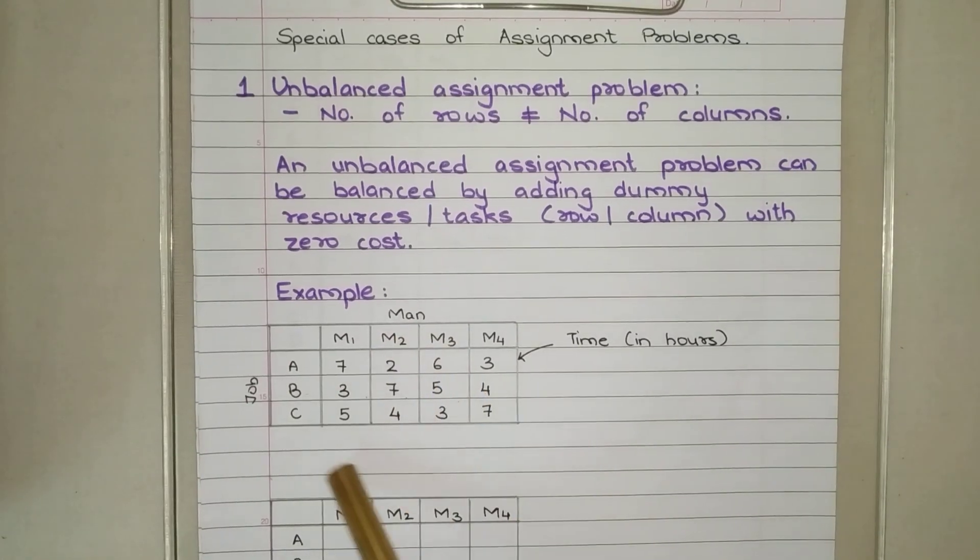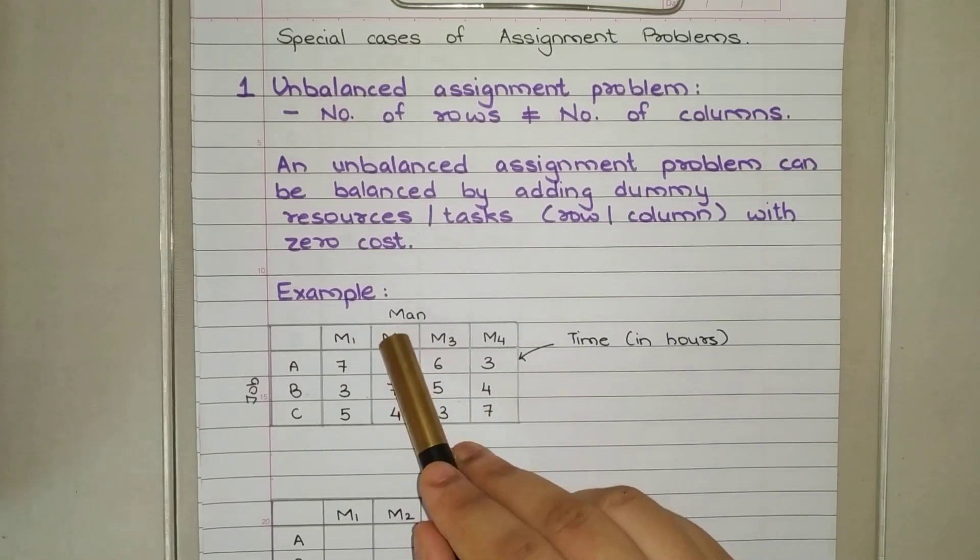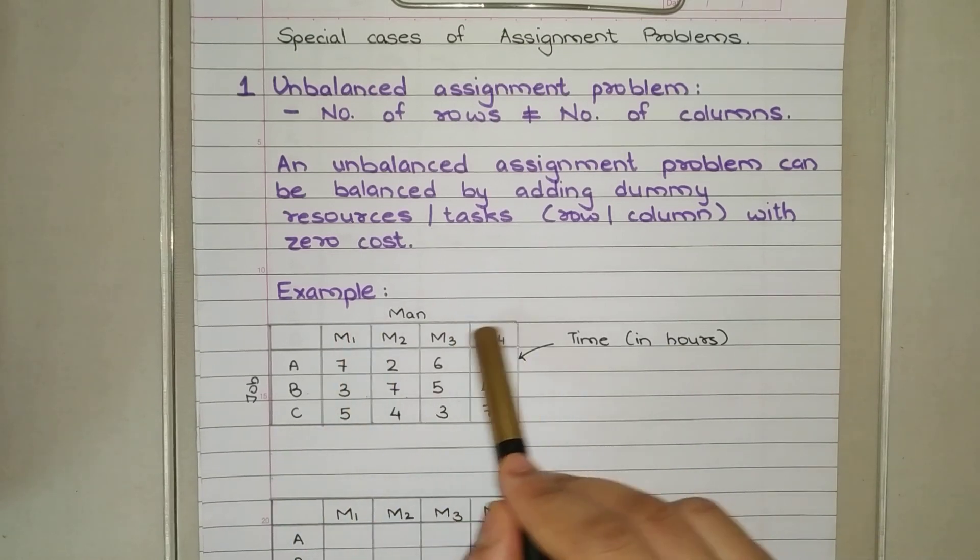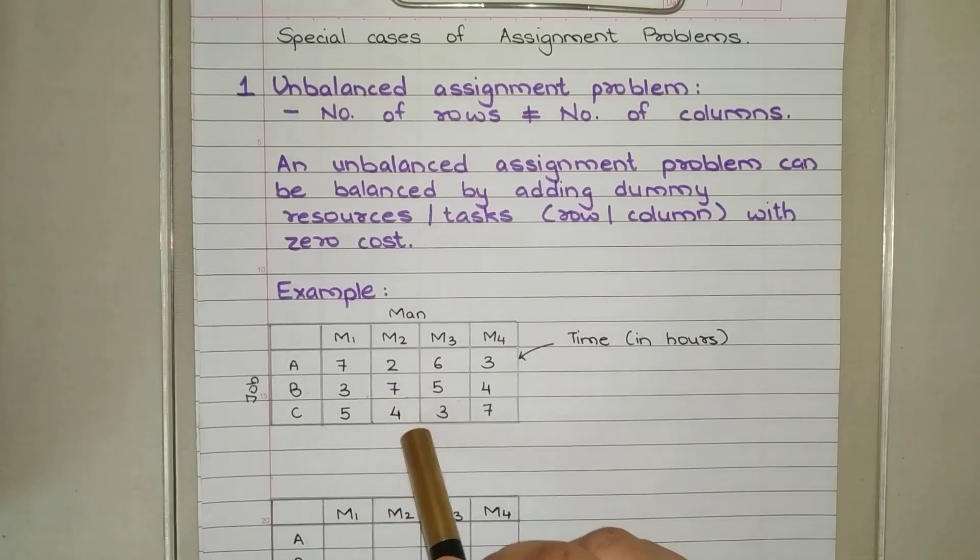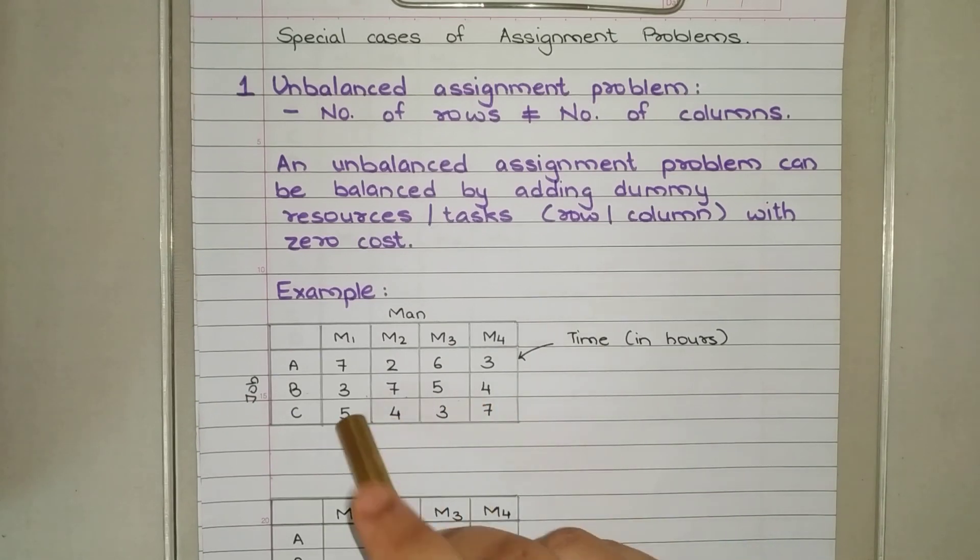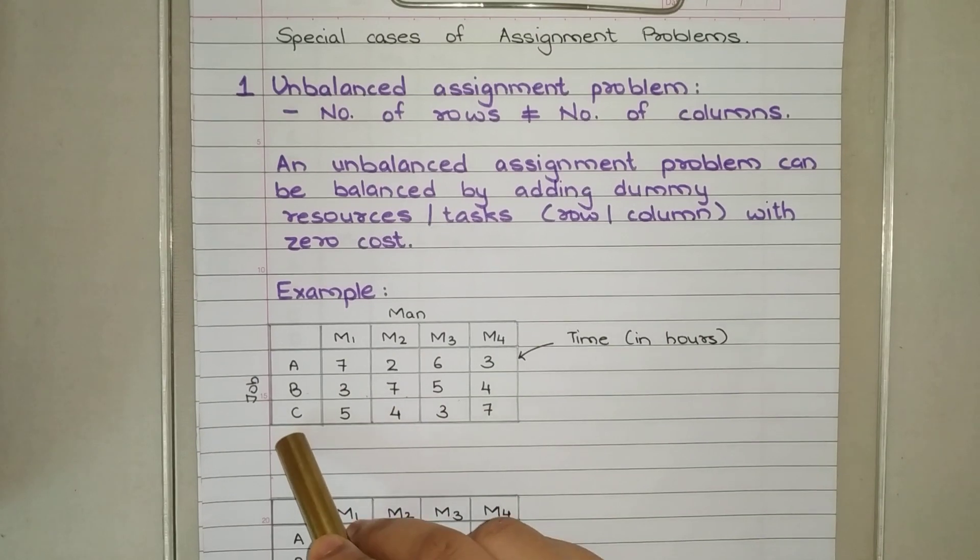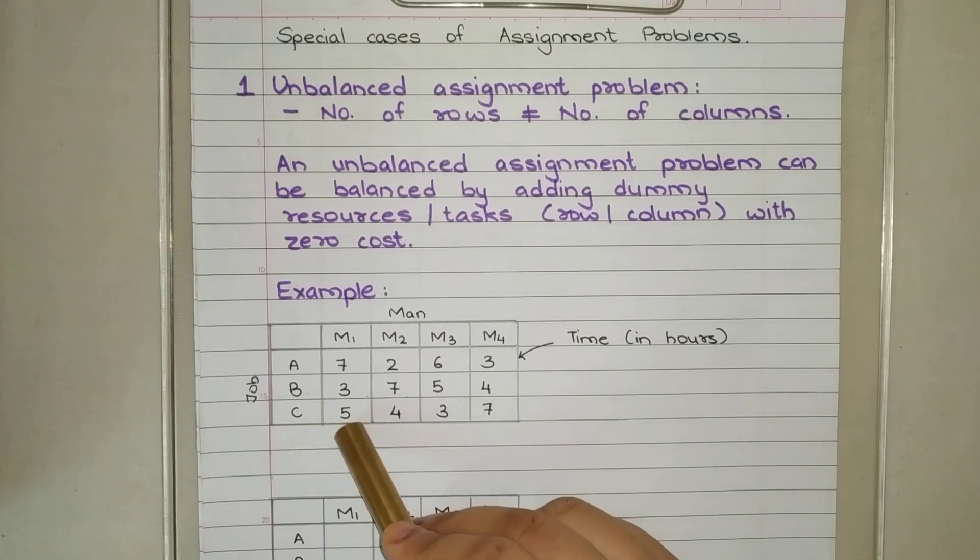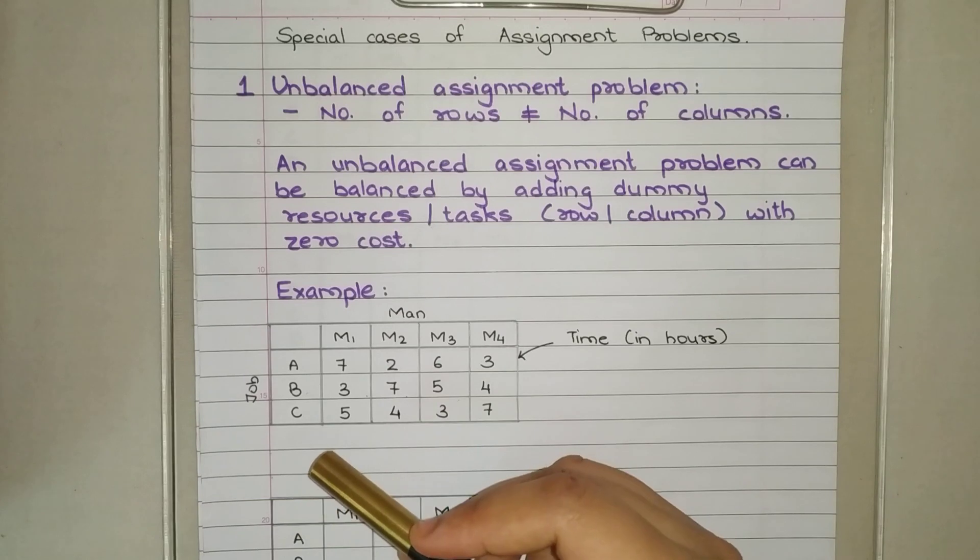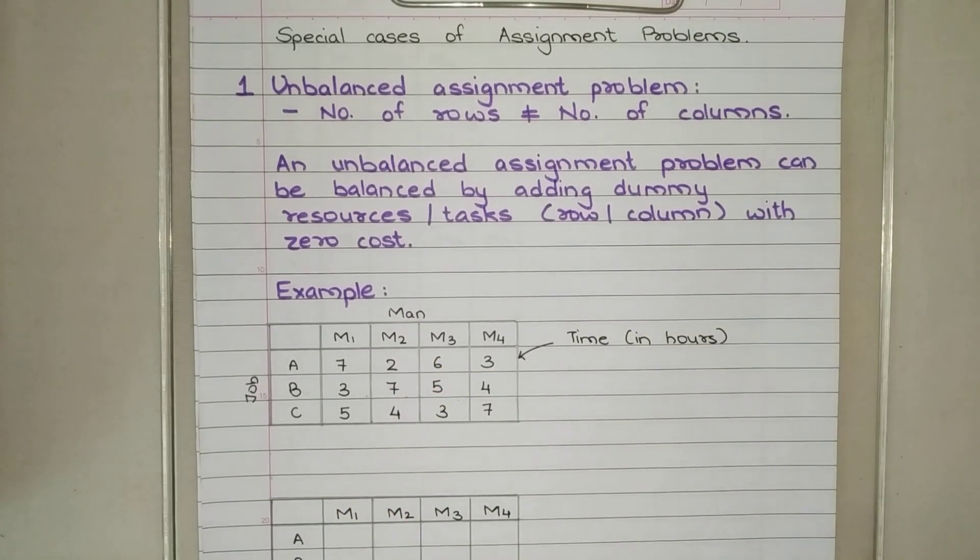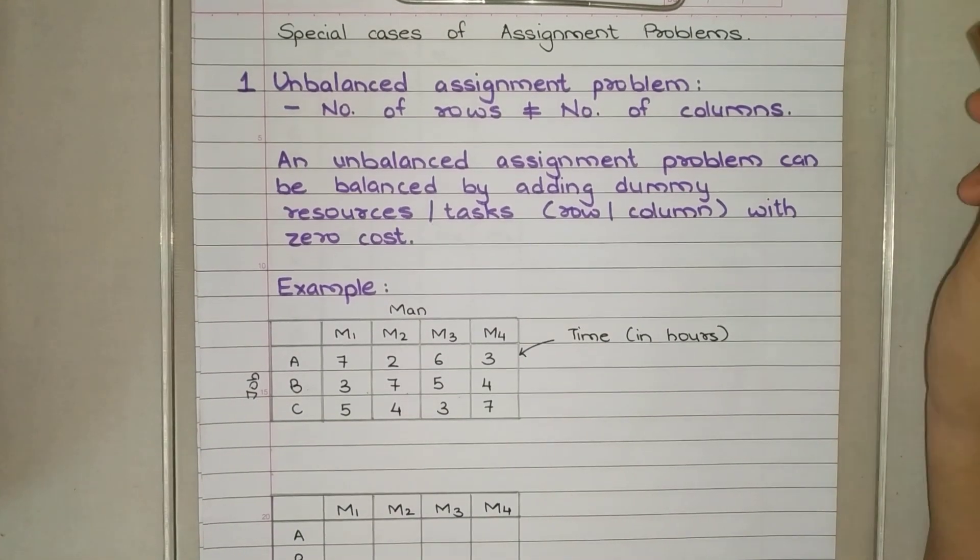For example, if I look at this table. How many men are there? Four. And how many jobs? Three. So I will have to add one dummy job D to make it 4 by 4. What cost will I fill in? Actually, when we solve like this, we put all zeros there. This job doesn't exist in reality, so whatever man does this job, the cost will be zero.